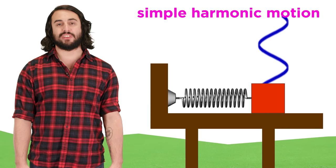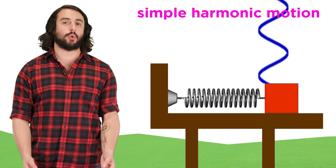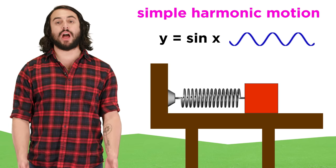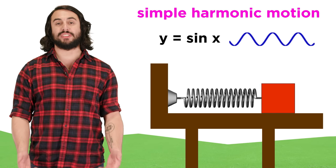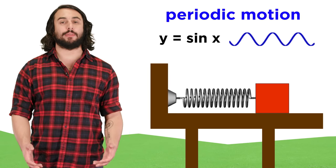If we were to graph the position of the block against time, it would display sinusoidal behavior, just like a trigonometric sine function, where the block continues to occupy the same positions over a particular period of time, which is why we call this periodic motion.